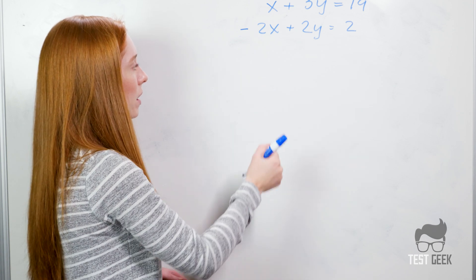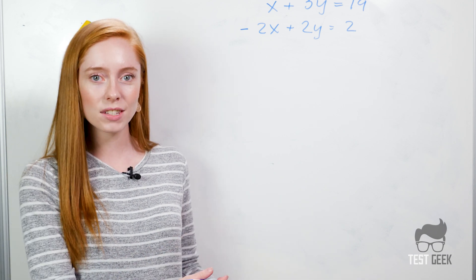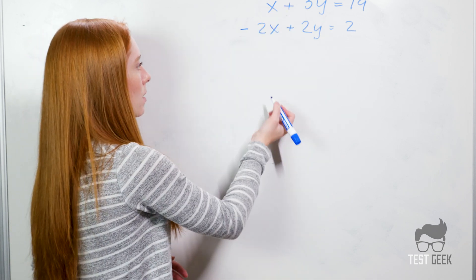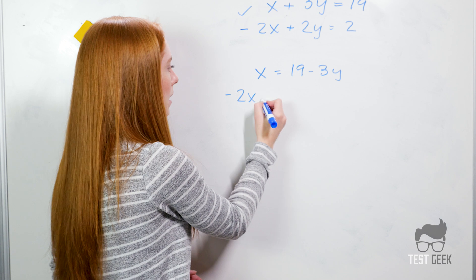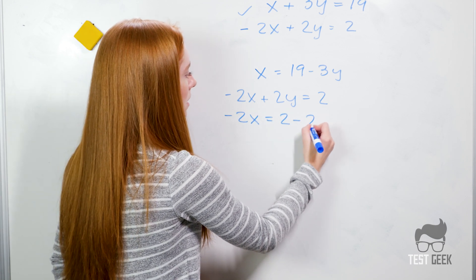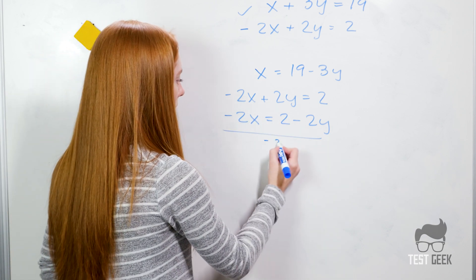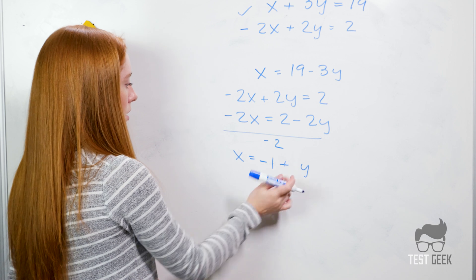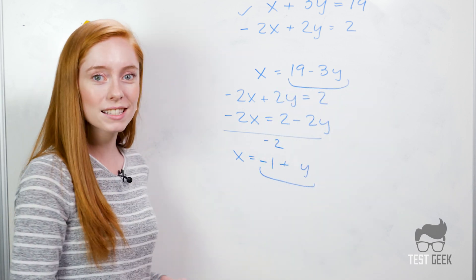The third option is to set both of our equations equal to each other. To do that, we need to set them both equal to one of the variables — say, x. We've already done this for the first equation and got x equals 19 minus 3y. Now let's work on the second: negative 2x plus 2y equals 2. We move over the 2y to get negative 2x equals 2 minus 2y, then divide by negative 2 the whole thing to get x equals negative 1 plus y.